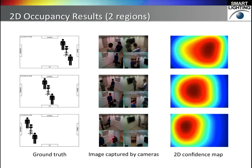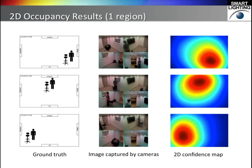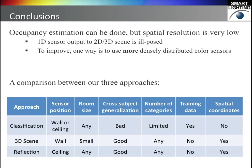These are the results for occupancy scenarios where there are two people in the room, and also for only one person. We can see that the confidence map is basically correct about where in the room is occupied. It is not as good as the 3D scene estimation results because the sensors are on the ceiling and we do not have the z-direction information, but the results are still basically correct. Our conclusion: occupancy estimation can be done, but spatial resolution is low. This is because we are doing 2D or 3D estimation from 1D sensor output — this is an ill-posed problem. We can't get information that is not there. If we use more sensors, the estimation results will improve, but more sensors means more money, and this is not really necessary.